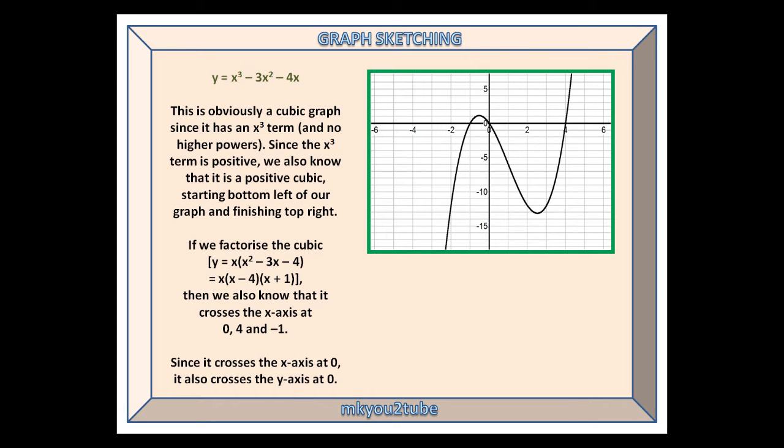Our first curve is y equals x cubed minus 3x squared minus 4x. This is obviously a cubic graph, since it has an x cubed term and no higher powers. Since the x cubed term is positive, we also know that it is a positive cubic, starting bottom left of our graph and finishing top right.